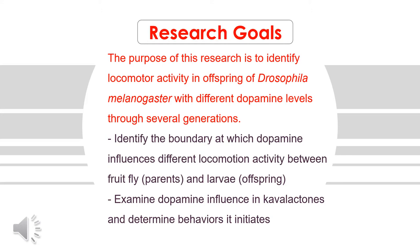Then once the trend has been identified, the next goal would be to mutate larvae given a specific measure of locomotion. Completing the task of mutating larvae for specific locomotion activity will be derived from the relationship identified in the previous task. Ultimately, the major focus is to identify the boundary at which dopamine level merely influenced locomotion activity.